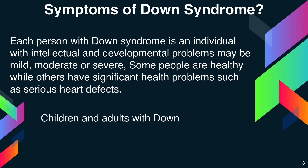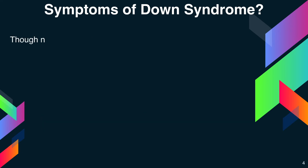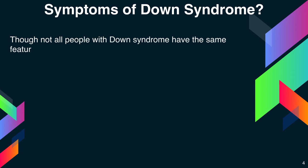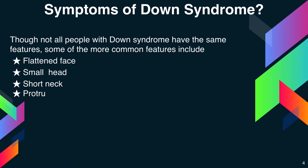Children and adults with Down syndrome have distinct facial features. Though not all people with Down syndrome have the same features, some of the more common features include: flattened face, small head, short neck, and protruding tongue.